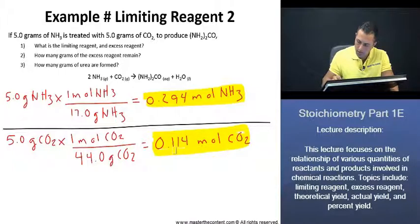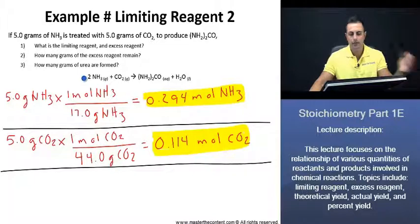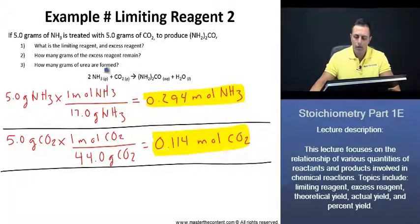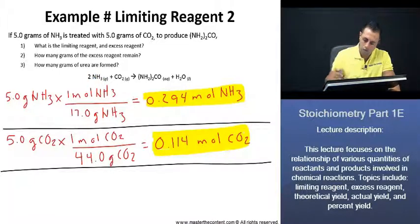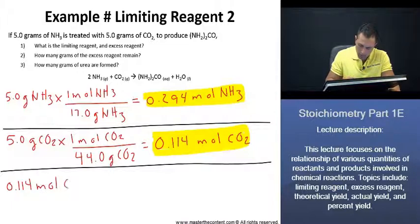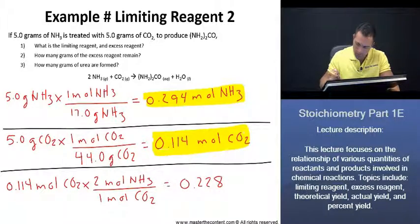Now we need to find the limiting reagent. Looking at our reaction, we see that per mole of carbon dioxide reacting, 2 moles of ammonia are being consumed. So we can do a mole ratio: beginning with 0.114 moles of carbon dioxide, and since 2 moles of ammonia are used per mole of carbon dioxide, that gives us 0.228 moles of ammonia.